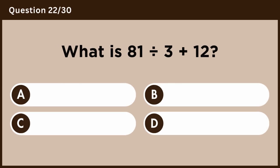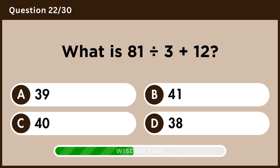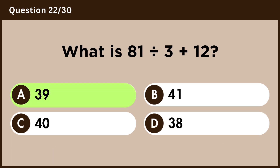What is 81 divided by 3 plus 12? Answer A, 39.